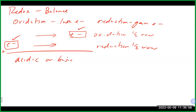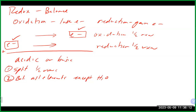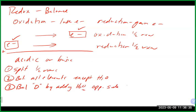When balancing redox reactions in acidic or basic solutions, there are a few steps. First, split into half reactions. Then balance all elements except hydrogen and oxygen using coefficients. Next, balance oxygen by adding water to whichever side needs it. When you add water, you're also adding hydrogen, so the opposite side gets two H⁺ for every water added. At that point, add electrons to balance the charge in each half reaction.